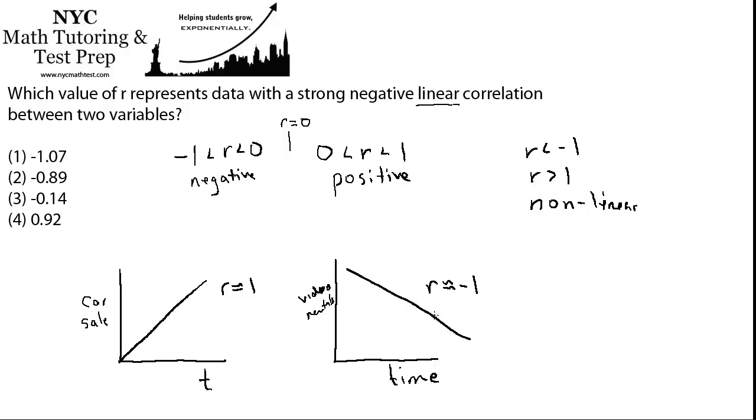They're both very much correlated. If all the data falls on this line or on this line, then those are strong correlations. So negative doesn't mean weak. Negative means that as the independent variable goes up, the dependent variable goes down.